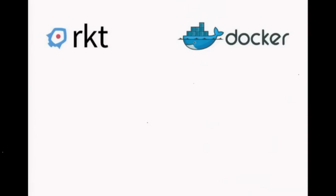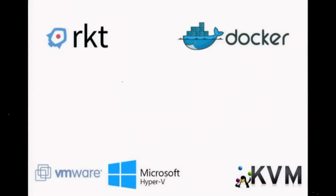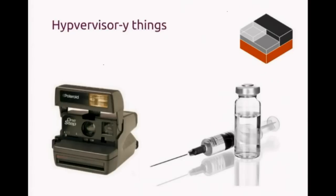There are container runtimes defined earlier in the talk — things like Rocket and Docker — where you have some application and metadata and give it to the runtime to run under certain constraints. Below that you have things where the core primitive is not a process but a system — give me a Windows, give me a CentOS, give me an Ubuntu. This is where we see LXD fitting in, at that lower level.